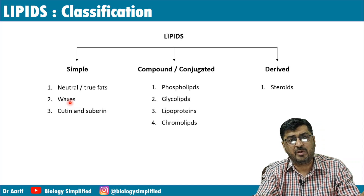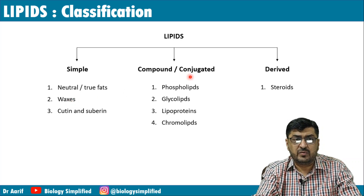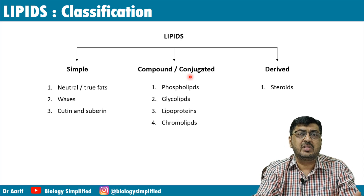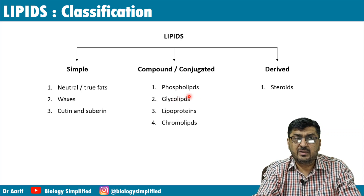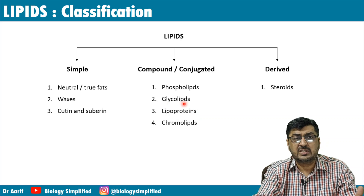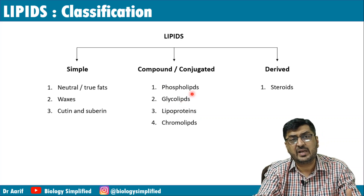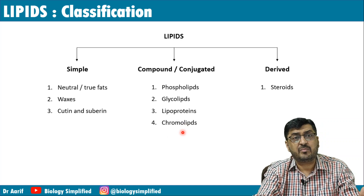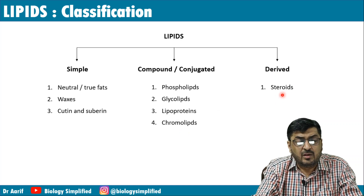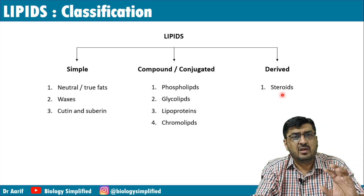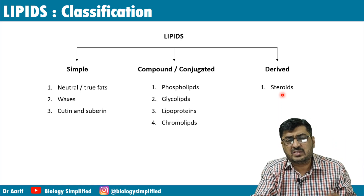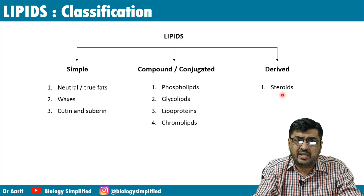Conjugated means the lipid is combined with something else — like conjugated proteins. Phospholipid is lipid with a phosphate group; glycolipid is lipid with carbohydrate; lipoprotein is lipid with protein; chromolipid is lipid with a colored pigment. Derived lipids include the important category of steroids. This is the scope of our discussion — the classification — and it is a small but slightly confusing topic, so please give it your full attention.